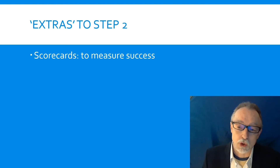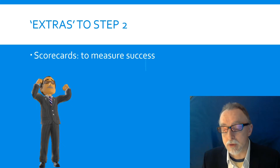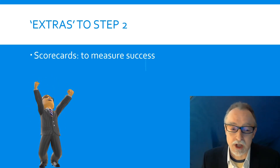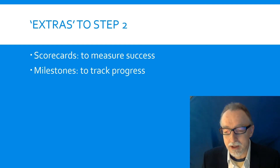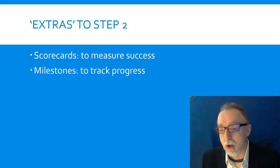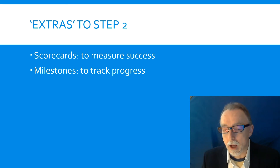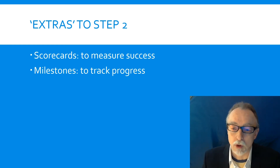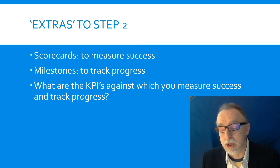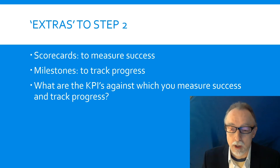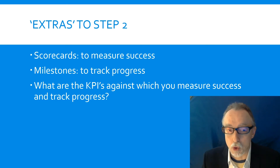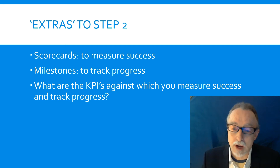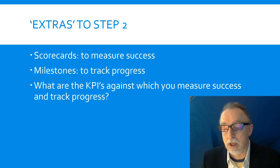A couple of extras for step two. You may want, as part of your strategy, to develop a scorecard of some sort as a way of measuring your success. How do you know when this is successful, and how successful do you need to be for it to be considered successful? In the same vein, you need some milestones — not tombstones as I often say, but milestones — points along the journey that will track your progress towards the overall objective. To do that you're going to need some KPIs, key performance indicators, because they are the things against which you measure your success. They are part of your scorecard and they track your progress and your milestones.